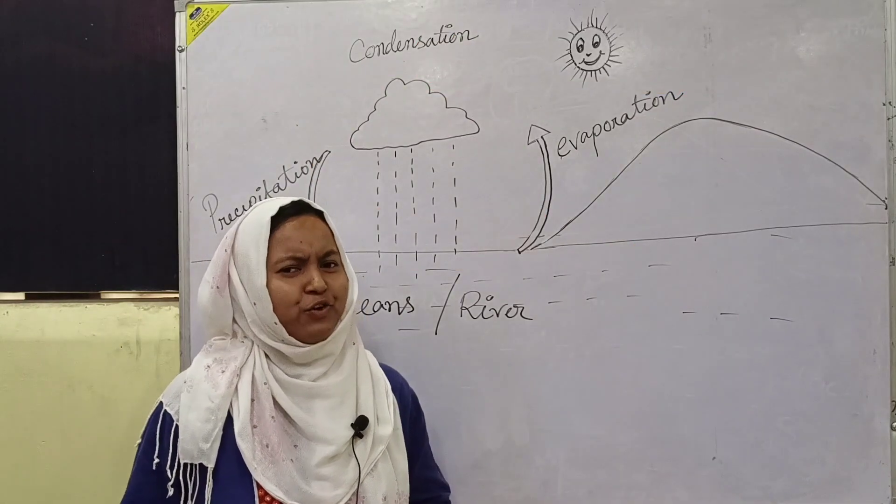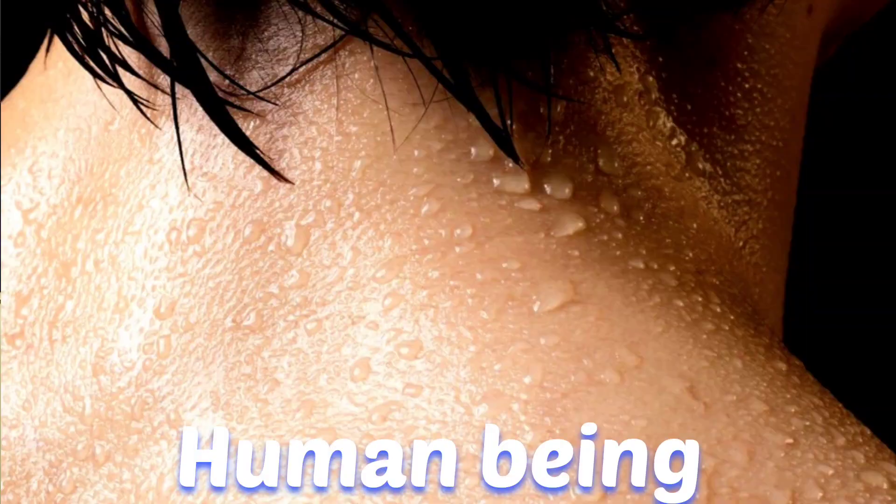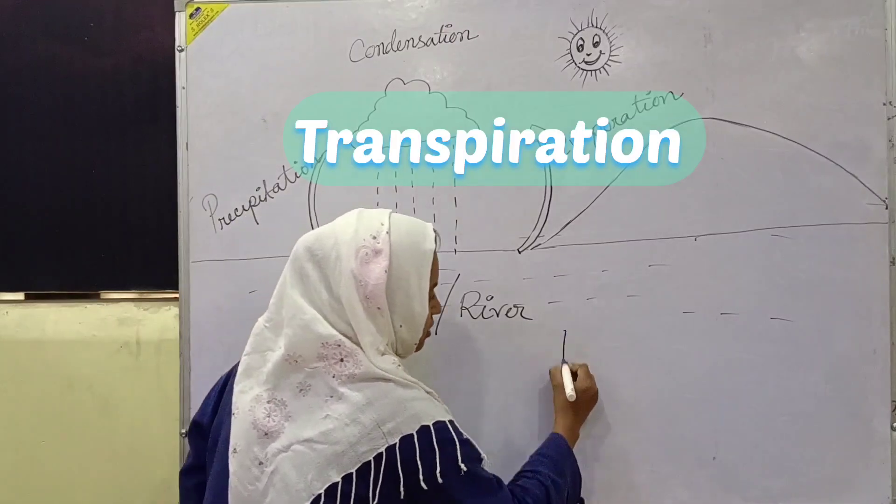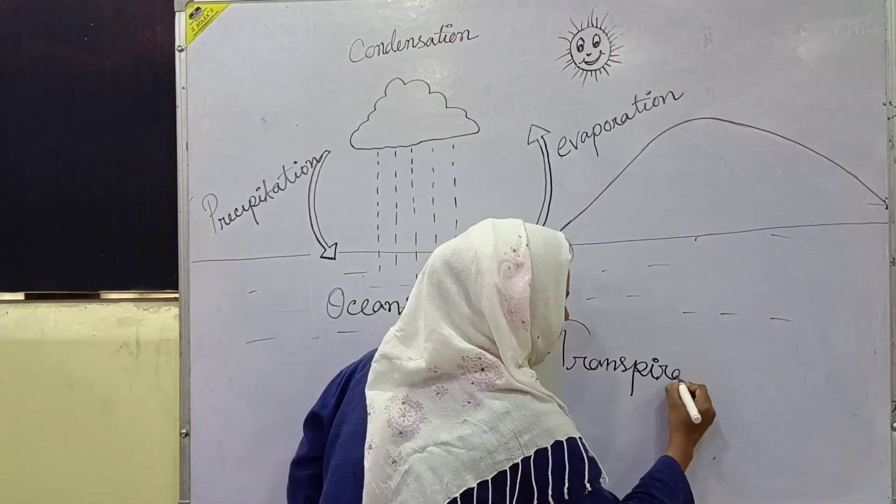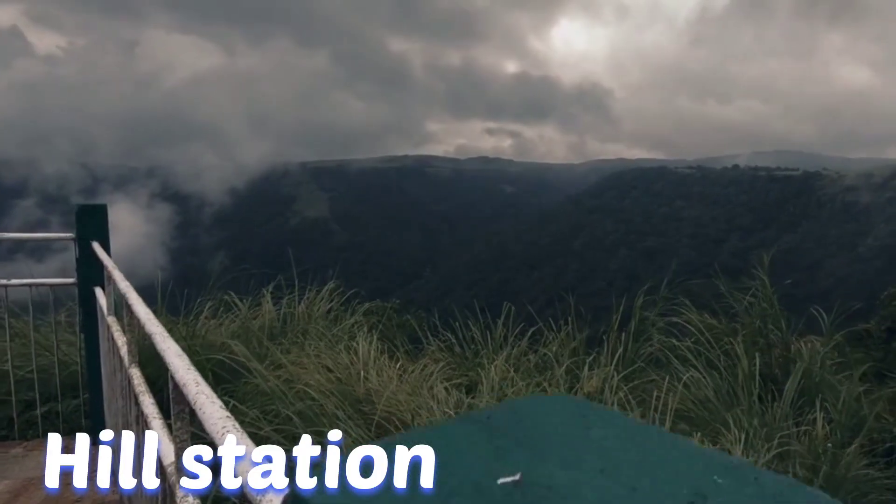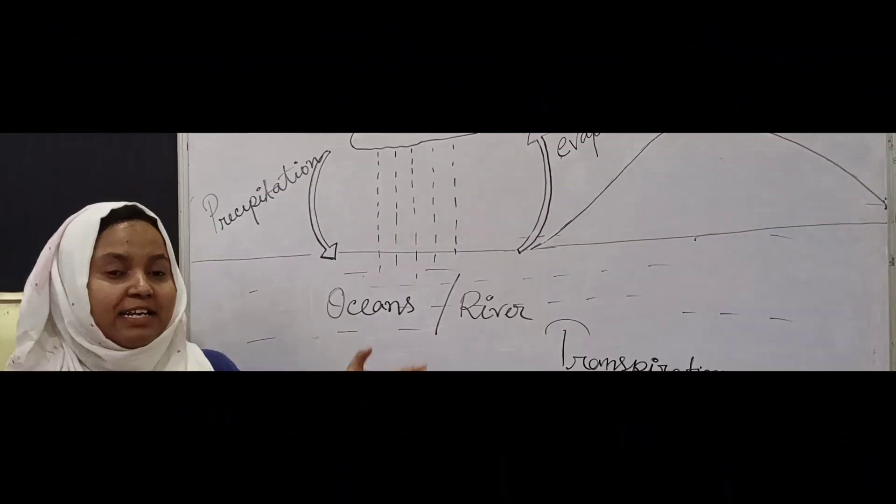Now I will tell you an interesting thing. Do you know plants also sweat? Yes, plants also sweat like human beings. This process is known as transpiration. That's why in the hill stations and in the forests there is more rain during any time.